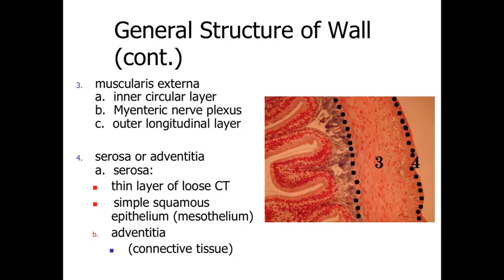That underlying region is called the muscularis externa. The muscularis externa is primarily smooth muscle, organized throughout most of the digestive tract in two distinct layers: an inner circular layer, where the smooth muscle cells are wrapped circumferentially around the lumen, and an outer longitudinal layer, where the smooth muscle cells run lengthwise along the tube-like organs. In many regions of the digestive tract we also have the myenteric nerve plexus — an autonomic nerve plexus — with autonomic nerve cells sitting between these two muscle layers, regulating the activity of the muscularis externa and the process of peristalsis.